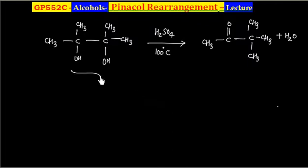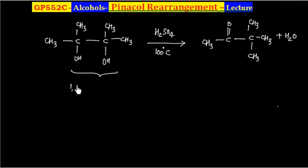Basically, this reactant is a 1,2-diol — you have a diol with two OH groups on adjacent carbons. So generally, a 1,2-diol gives pinacol rearrangement.